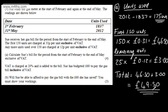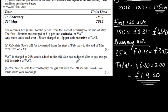So £49.50 is our answer. We would get one mark for finding the units used, one mark for the first 150 units calculation, one mark for the remaining units, and one mark for adding them together — all exclusive of VAT.